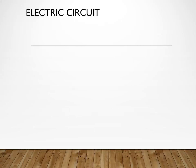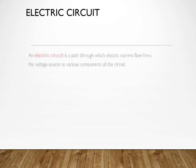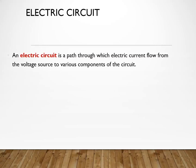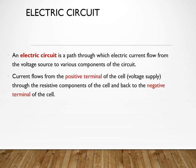Let us start straight away with electric circuits. An electric circuit is a path through which electric current flows from the voltage source throughout the various components of the circuit. Current flows from the positive terminal of the cell, which is our voltage supply, through the resistive components of the cell and back to the negative terminal of the cell.